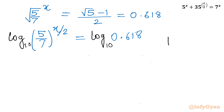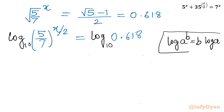Now I will write one log property: log(a^b) = b·log(a). So let us apply. This power becomes a multiplier — I will write x/2 as the coefficient.